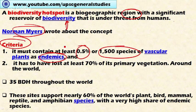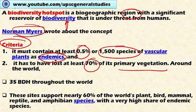The second criteria is that the area must have lost 70 percent of its primary vegetation due to human interferences. So the two criteria are: first, it should contain 0.5 percent (or 1,400 species) of vascular plants as endemic; and second, it should have lost 70 percent of its primary vegetation due to human interferences. At present, there are 35 biodiversity hotspots throughout the world.